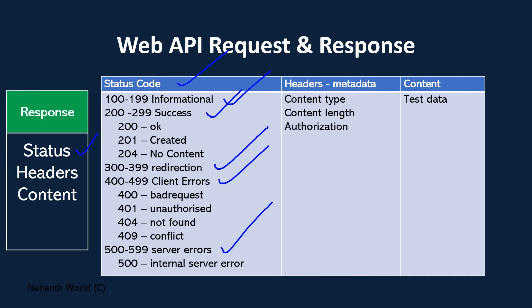The 100–199 series is used for informational data — if the server wants to give back an informational status code, it will use 100–199. If the server wants to give a success status code, it will give back 200–299. Every number between 200 and 299 indicates a separate success status code.